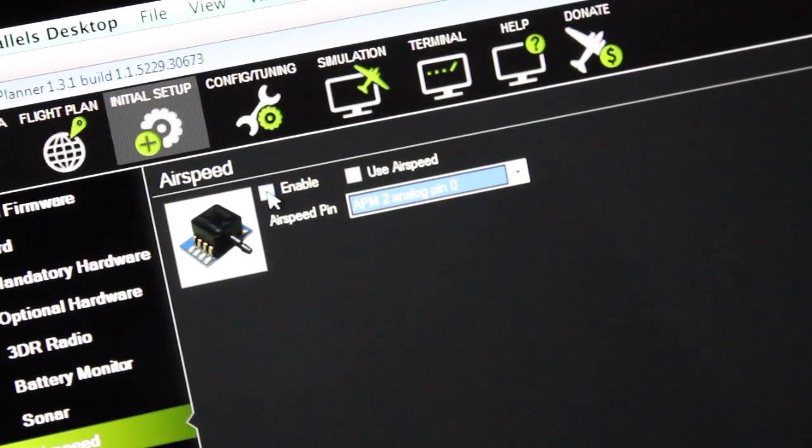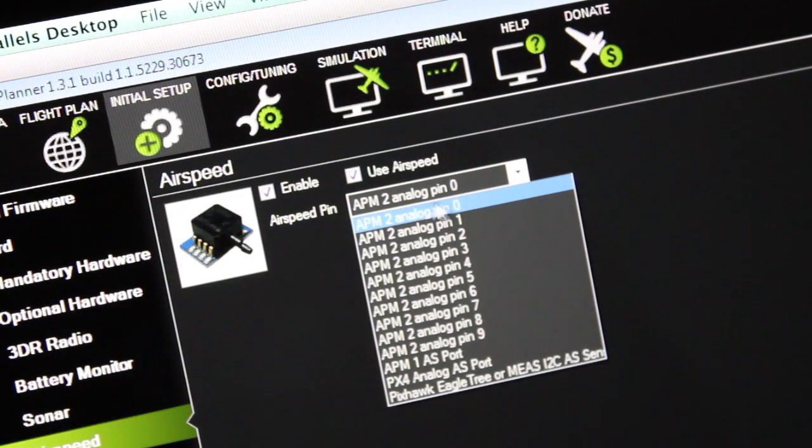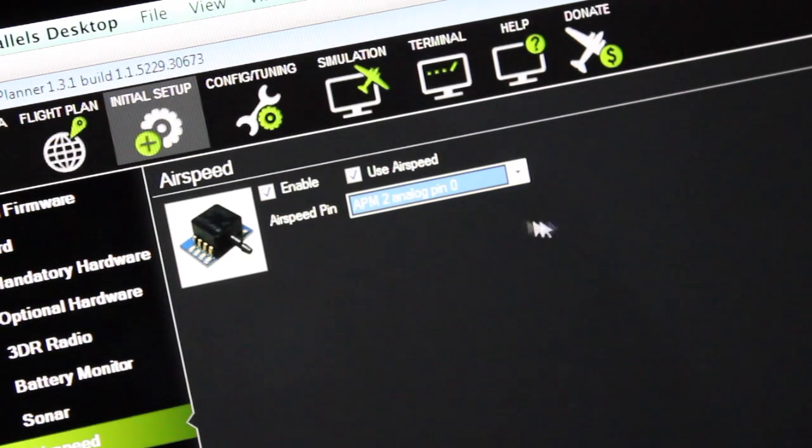For the airspeed configuration we want to go ahead and enable the sensor. We definitely want to use airspeed and that means that this will be used in the calculations when flying autonomously and by default this will be selected APM 2 analog pin zero which is where we have our sensor connected.